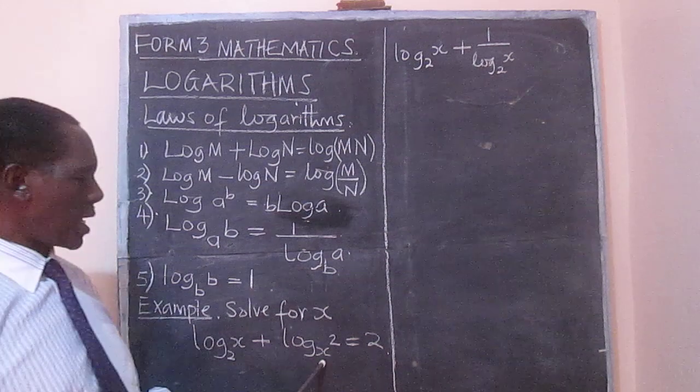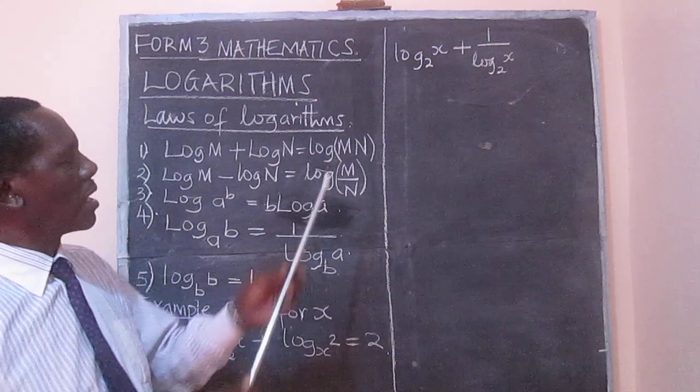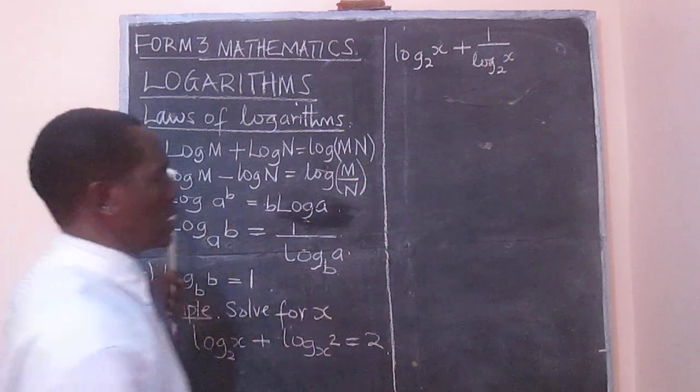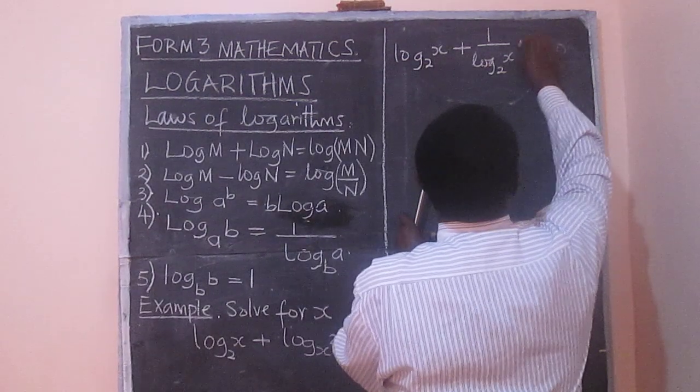So logarithm to base x of 2 is the same as 1 over logarithm to base 2 of x. And this we have been told is equal to 2.